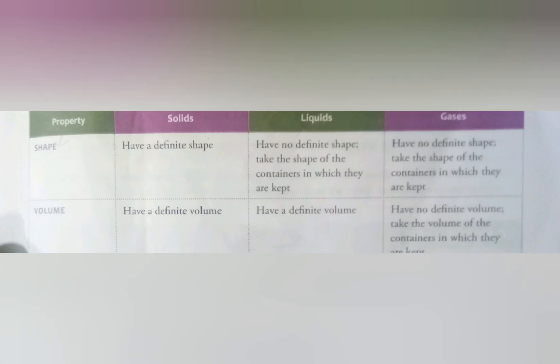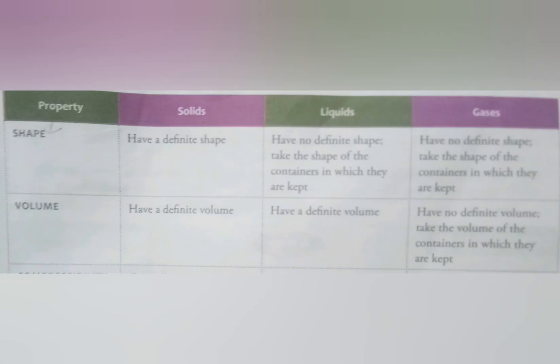The second property is volume. Solids have a definite volume. Liquids have a definite volume. But gases have no definite volume — they take the volume of the container in which they are kept. Solids take up the same amount of space wherever kept. Liquids take up a definite amount of space in a container, hence have a definite volume. Gases take the shape and volume of the container they occupy.